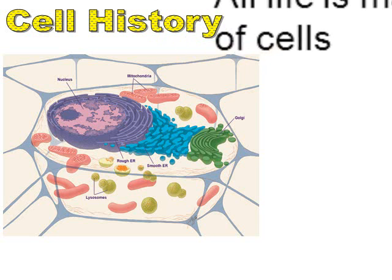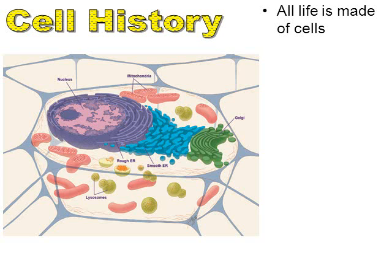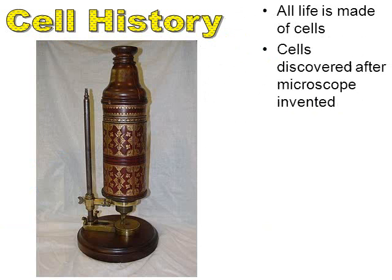The first thing I want to mention is the history of cells. All life is made from cells. This is a pretty basic, simplistic statement today, but there was a time when this was not known. The cell itself wasn't even discovered until the 1600s with the invention of the microscope. Here we have a picture of the microscope that actually discovered cells — it belonged to a gentleman by the name of Robert Hooke.